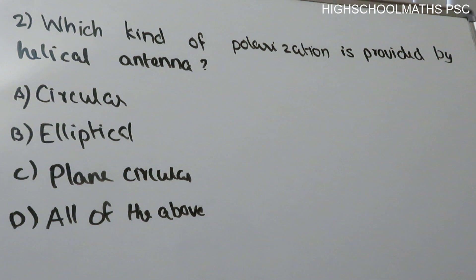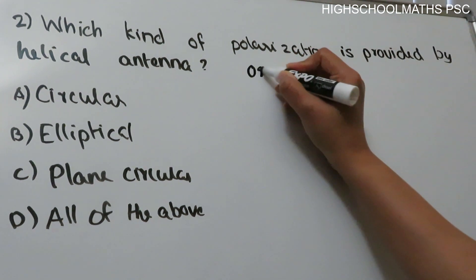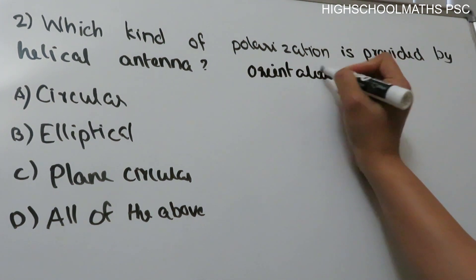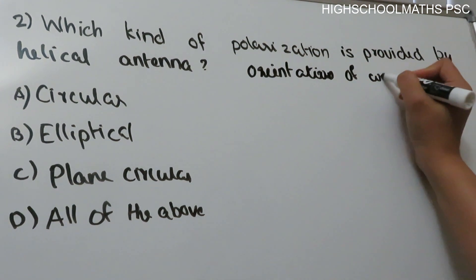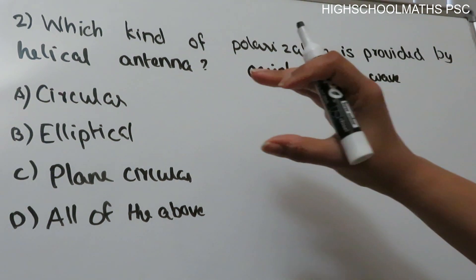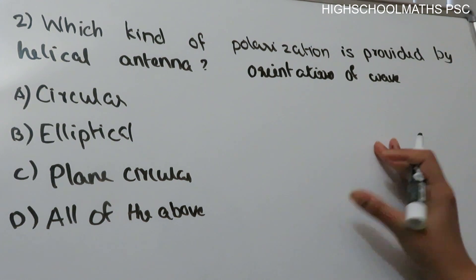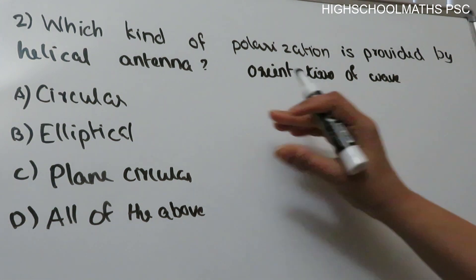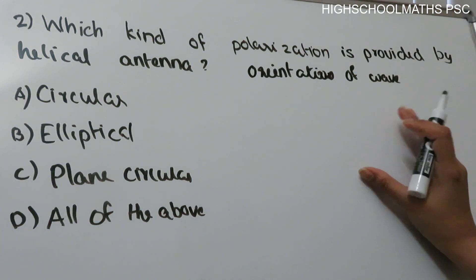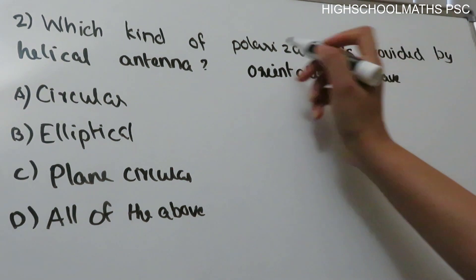Question 2: Which kind of polarization is provided by a helical antenna? Option A: circular, option B: elliptical, option C: plain circular, option D: all of them. Polarization refers to the orientation of the wave — specifically the oscillation of the electromagnetic field component.